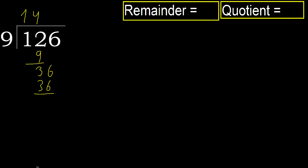36 minus 36 is 0. The remainder is 0, therefore the division is finished.